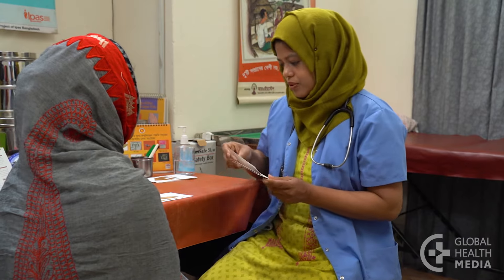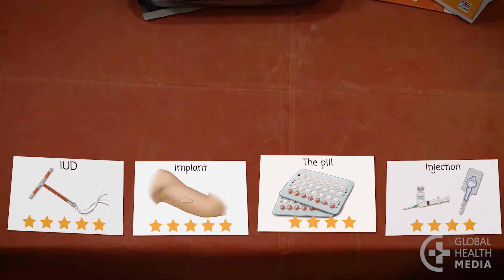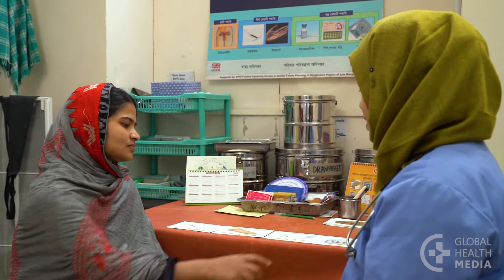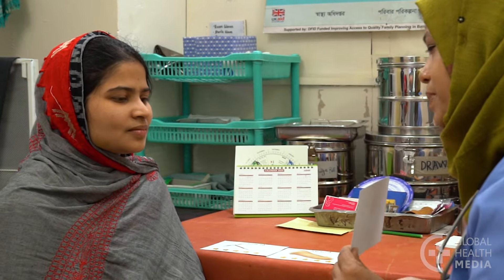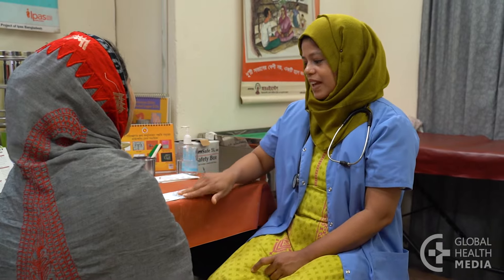Next, arrange the remaining method cards in order of effectiveness. Ask the woman if there are any methods she doesn't want to use. Now, tell your client about the remaining methods based on what women like about them and the features that matter most to your client. Use simple, clear explanations. Through this process, the client's choices are narrowed down according to her answers and you avoid giving information on methods that are not relevant to her needs.